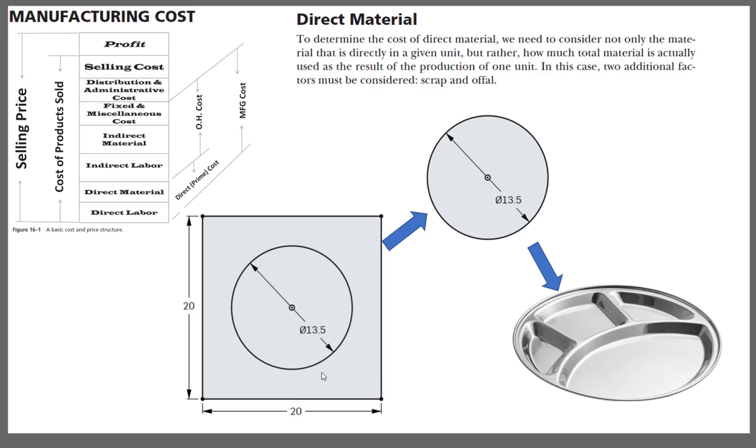Now this metal sheet will be undergoing multiple processes. One of the first processes will be cutting out a circular section required for producing this particular plate. And that circular section will be further used to make the plate through stamping process.